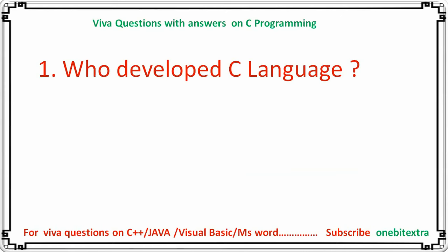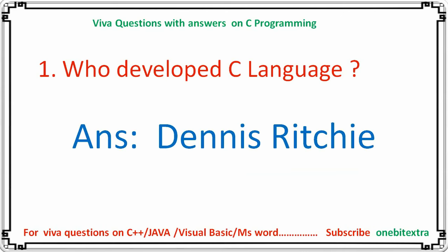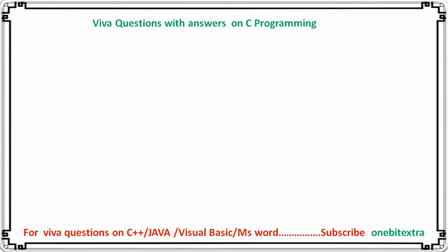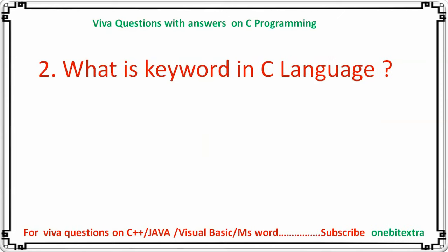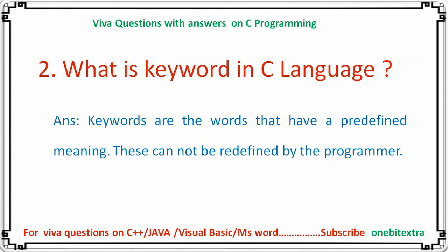The first question is: who developed C language? The answer is Dennis Ritchie. Dennis Ritchie developed C language. Next question: what is a keyword in C language? Keywords are the words that have a predefined meaning. These cannot be redefined by the programmer.